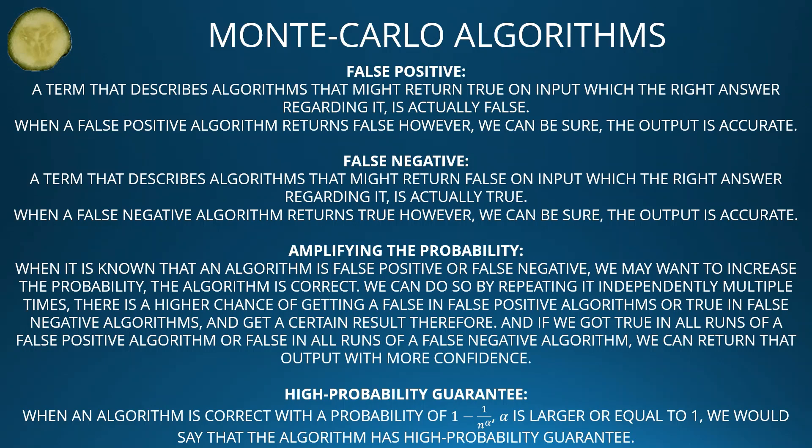When a false positive algorithm returns false, however, we can be sure that the output is accurate. Next: false negative. This is a term that describes algorithms that might return false on input for which the correct answer is actually true.